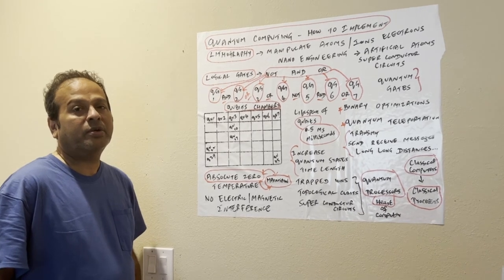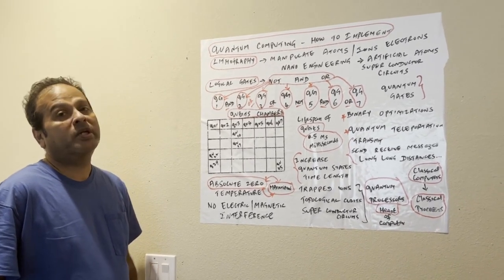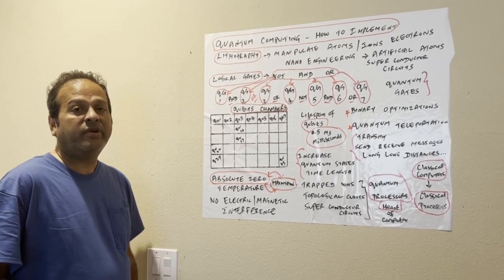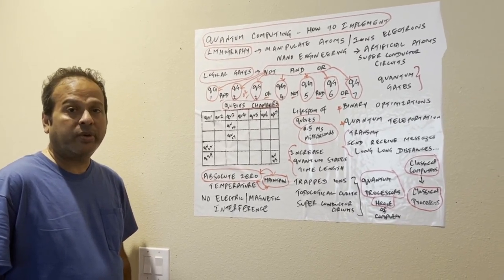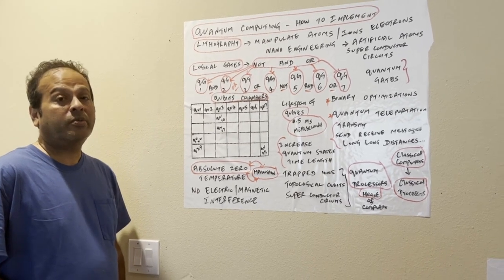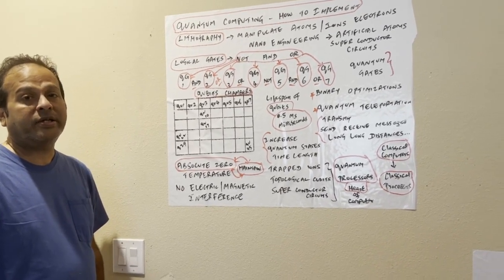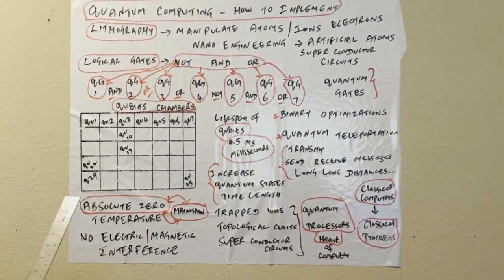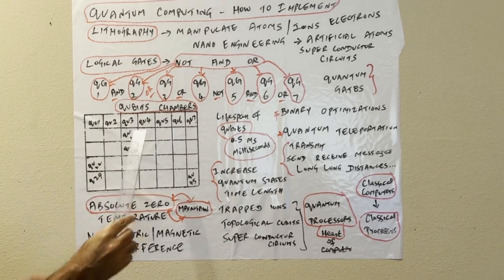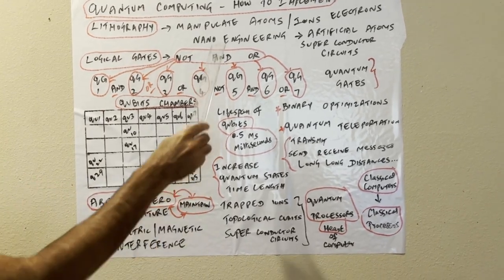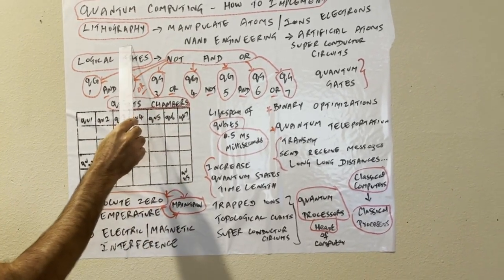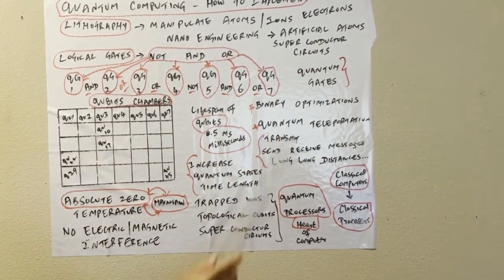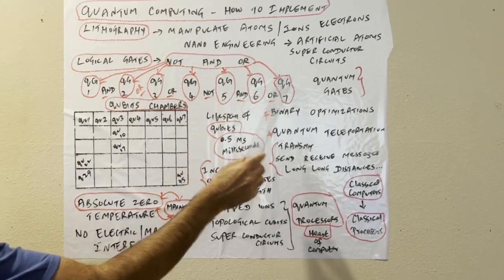I'm going to talk about how to implement the quantum computers. Please watch my other two videos. First video I talk about what is quantum computers. Second one, why do we need quantum computers compared to the classical computers, atom model. Here I'll explain how to implement quantum computers. This is a brief overview. You know we use the concept of lithography, manipulate the atoms and ions, electrons of the atom, or use nano engineering using artificial atoms, superconductor circuits, chips, quantum gates.